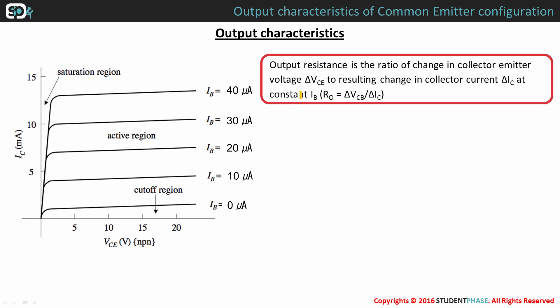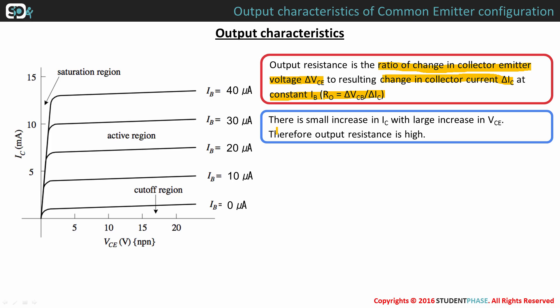Output resistance is calculated as the ratio of change in collector emitter voltage VCE to the resulting change in collector current IC at constant base current IB. It is very evident from the graph that there is very small increase in IC with large increase in VCE. The value of IC here and the value of IC here is almost same. Therefore, output resistance is said to be very high.